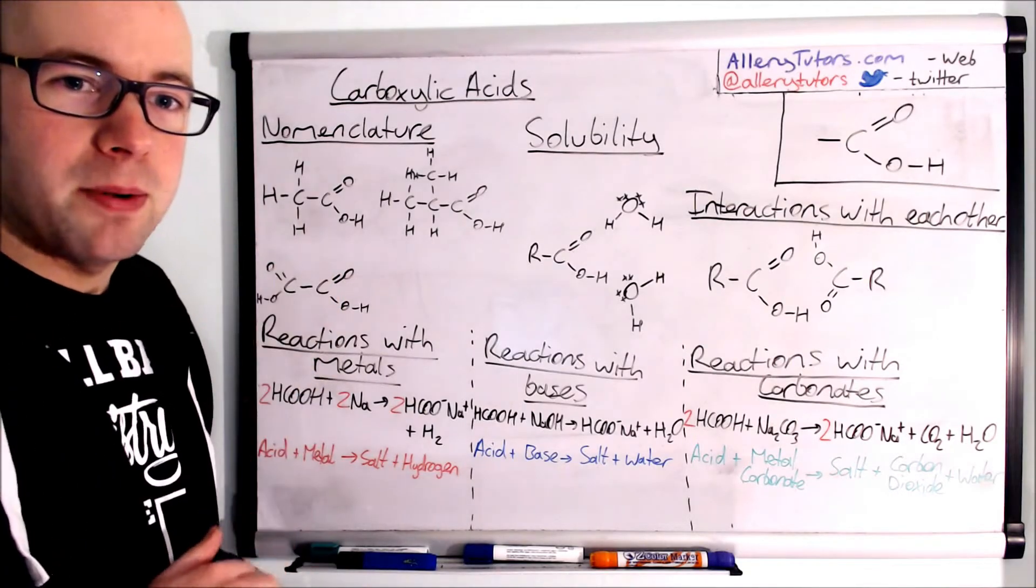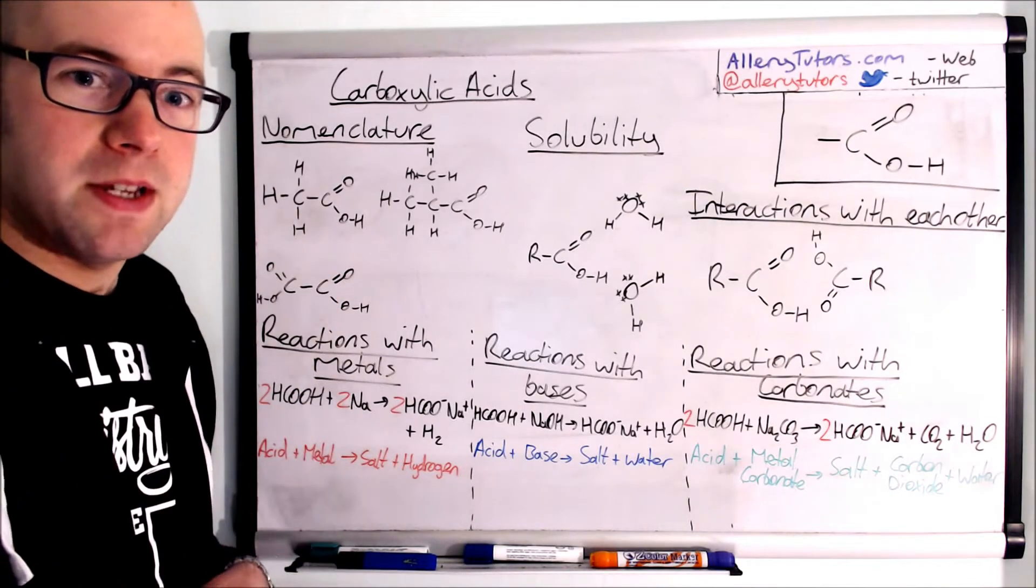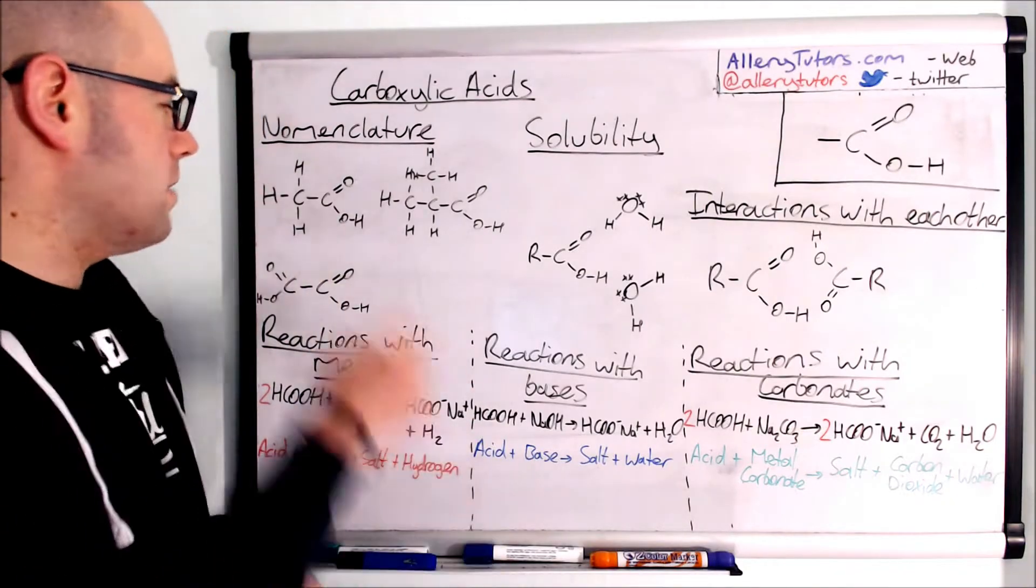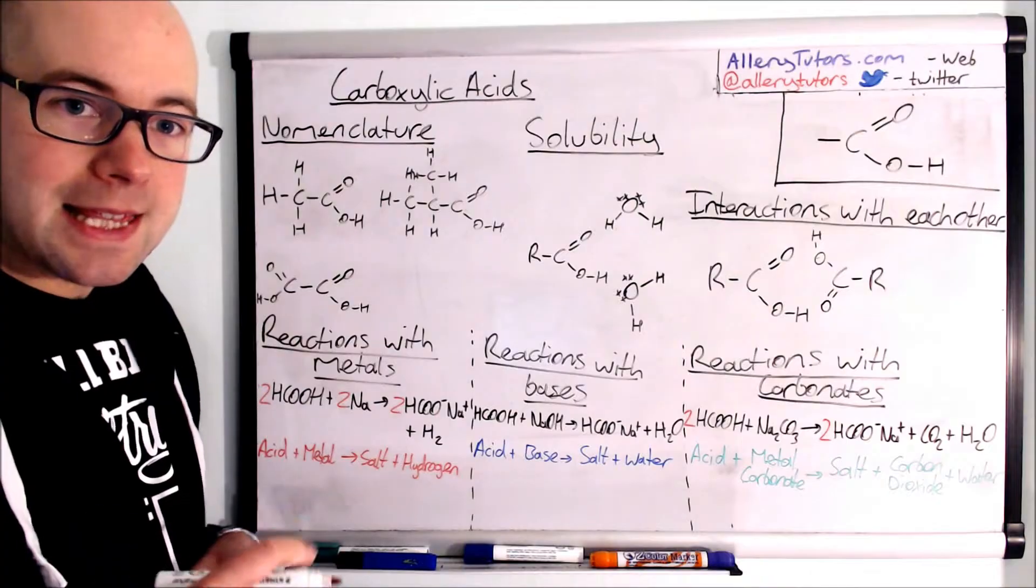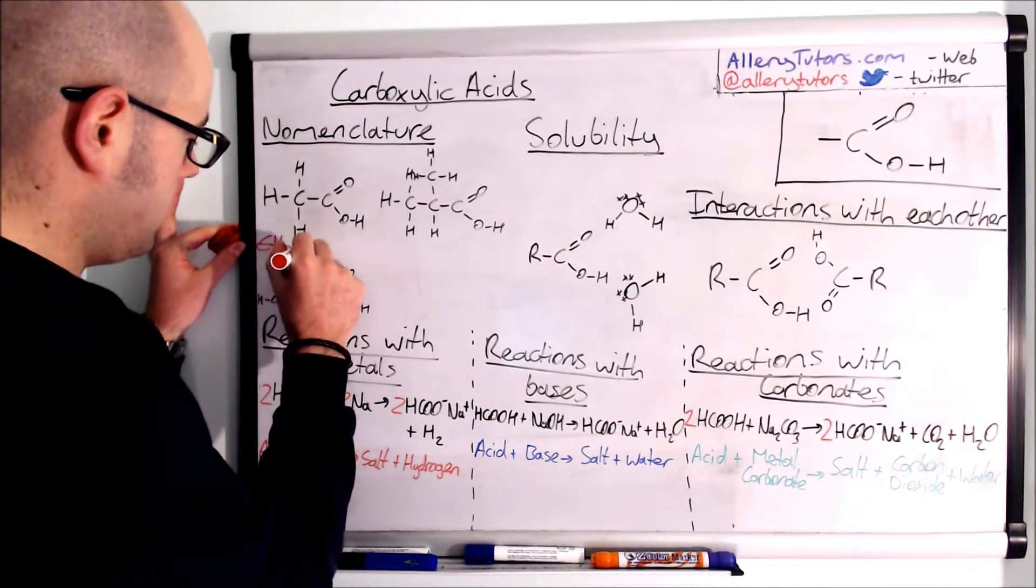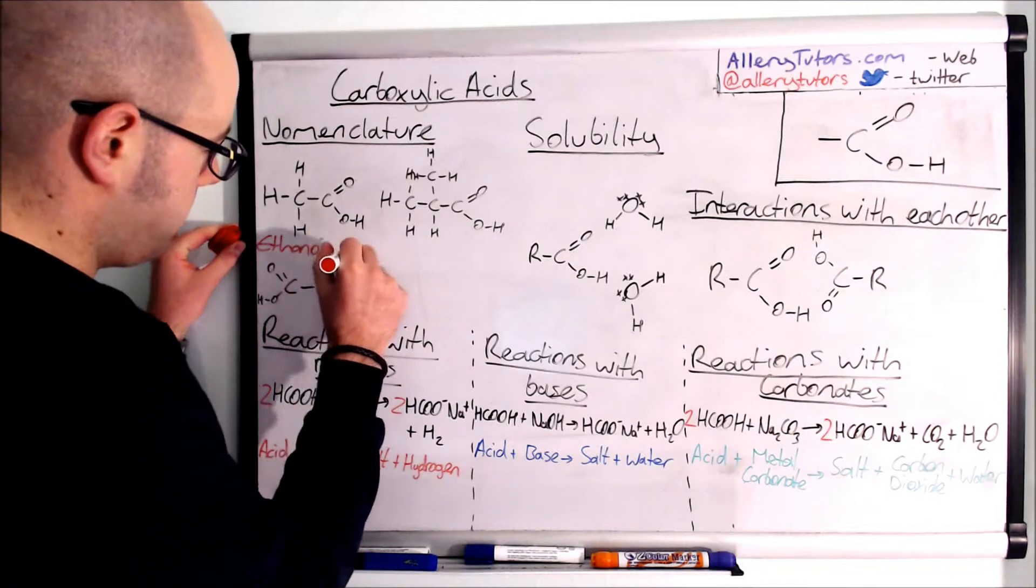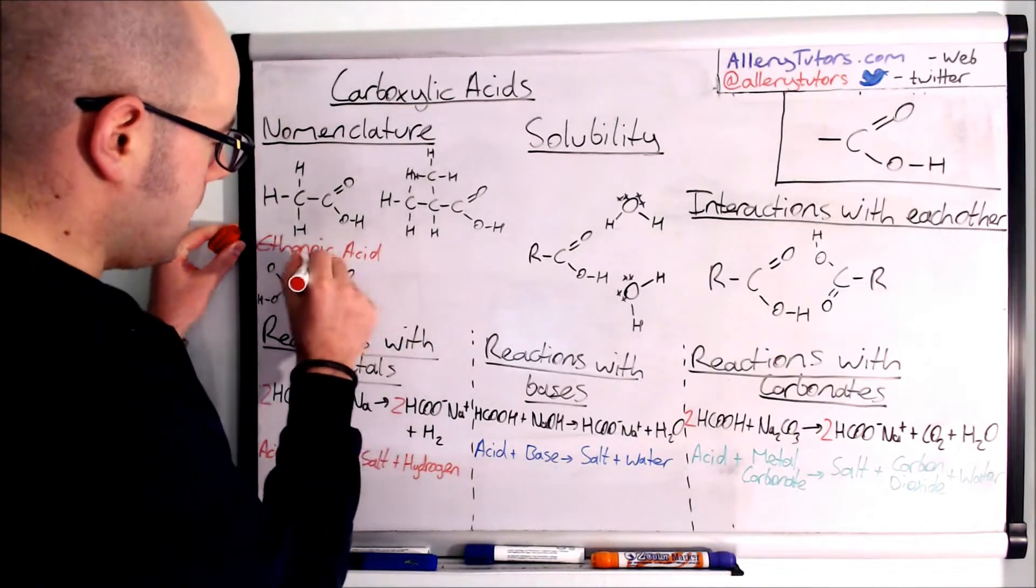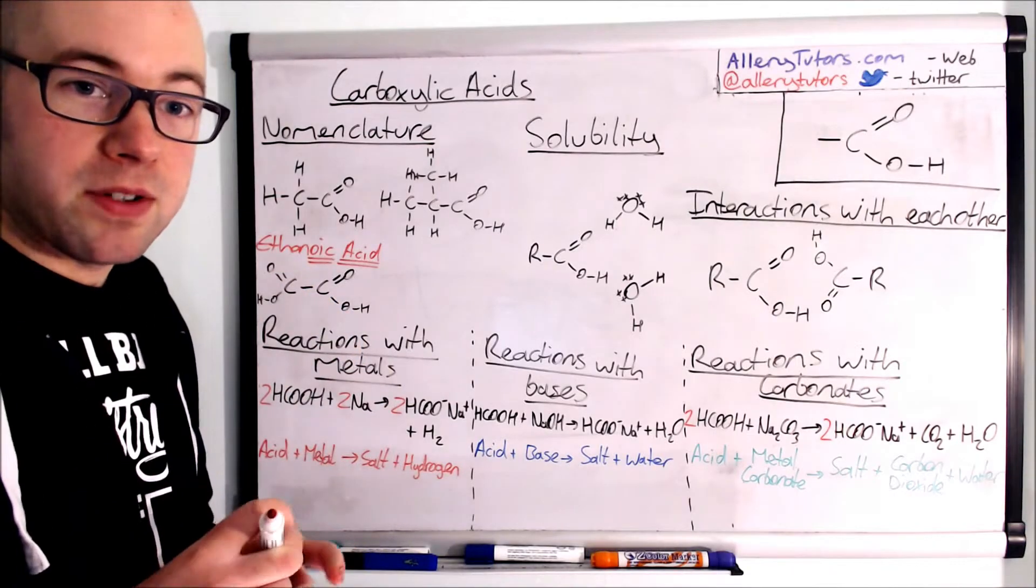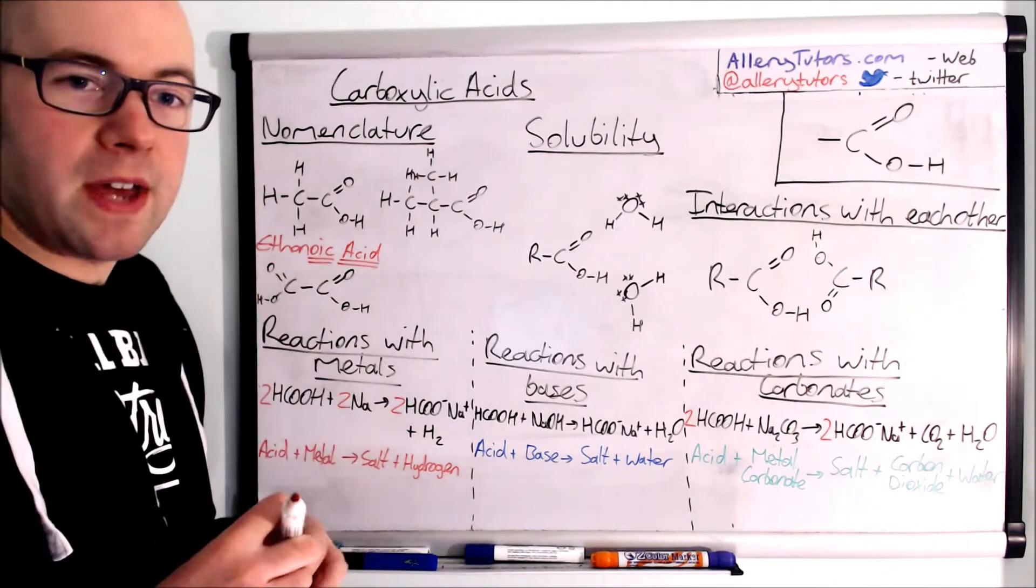So nomenclature is really important as well because you have to be able to name these compounds. We're going to start with the easy one here first and you can see we have two carbons so that makes it an ETH. So that's going to be ethanoic acid. Nice and easy, always ends in oic acid and wherever you see one of these you've got to have that at the end of it.